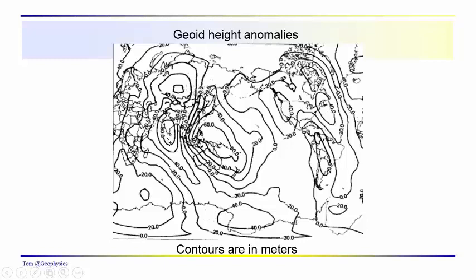We see this when we look at geoid height anomalies on a global scale. Coming from the Indian Ocean near Sri Lanka or the southern tip of India, we're at about minus 80 meters. Going through Indonesia, the Philippines, across northern Australia, out toward Hawaii, we're up about 60 meters — so we've gone uphill about 140 meters. Getting over to Hawaii we're going back downhill, and continuing toward the eastern coast of the U.S. and North and South America. You've actually sailed your boat uphill 140 meters on a surface of constant gravitational potential.